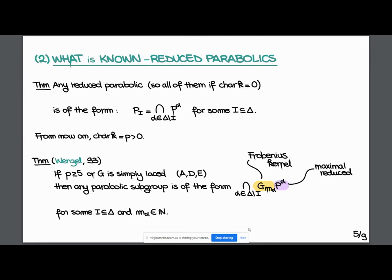What do we know about general parabolic subgroups in characteristic p? First, about reduced ones: all parabolic subgroups over C are of the form where we fix a subset of delta and intersect all parabolic subgroups associated to those roots. We get all possible parabolic subgroups this way. Then we pass to positive characteristic. From now until the rest of the talk, we fix p, a prime integer, as the characteristic of our field. We're not working over C anymore.